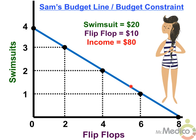As we move along this budget line in either direction, you can see that in order to gain more of one product, Sam has to sacrifice some units of the other product. This model is really just a neat way of illustrating the concept of an opportunity cost. Because the line has a constant slope, we know the opportunity costs are also constant.